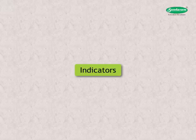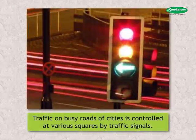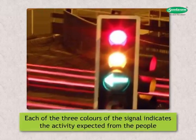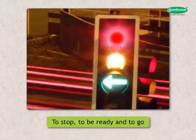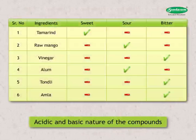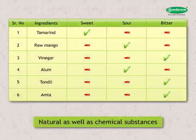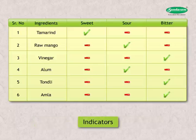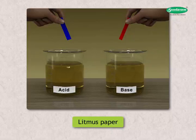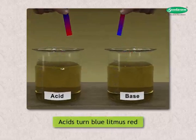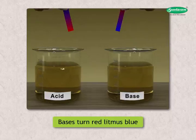What is meant by indicators? You must have observed that the traffic on busy roads of cities is controlled at various squares by traffic signals. Each of the three colours of the signal indicates the activity expected from the people — to stop, to be ready, and to go. The acidic and basic nature of compounds can also be indicated by some natural as well as chemical substances. These are known as indicators. You have studied in previous classes that litmus papers help in detecting the acidic and basic nature of a given compound. Acids turn blue litmus red, whereas bases turn red litmus blue.